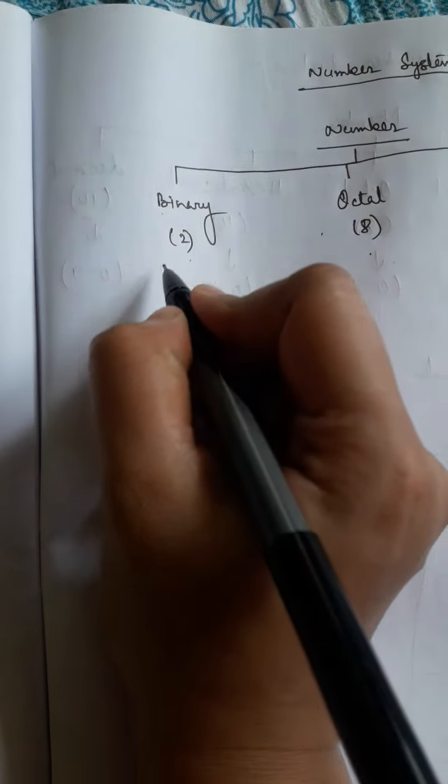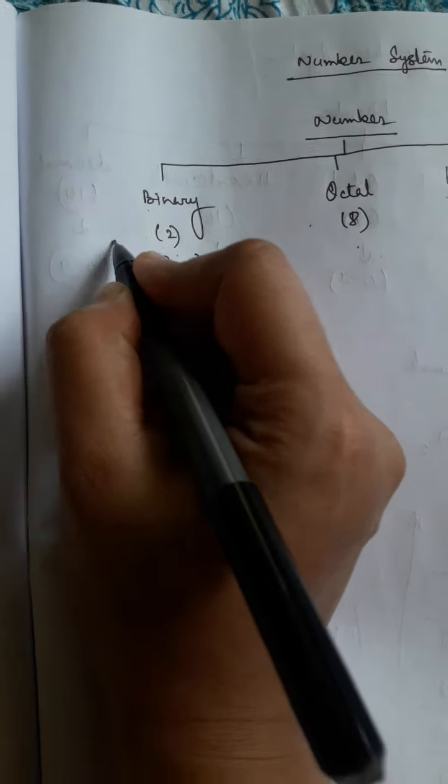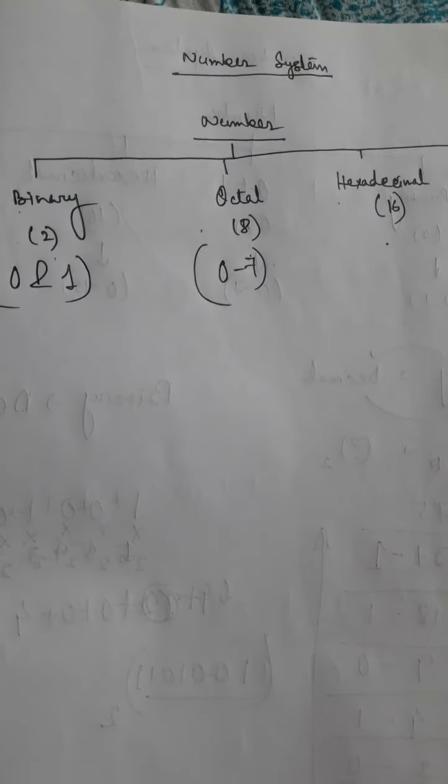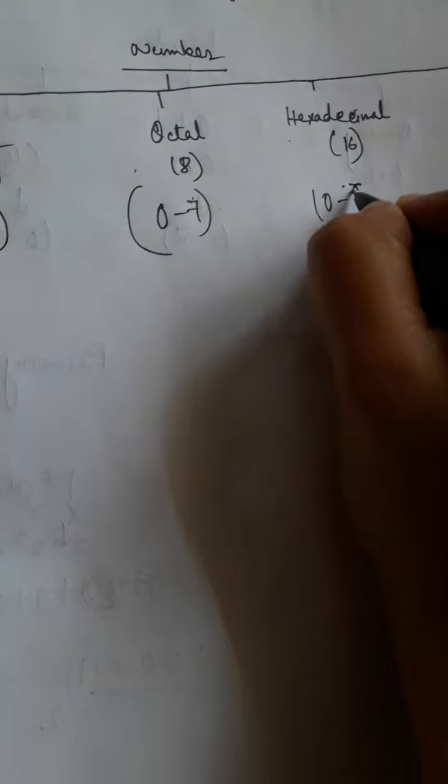The binary number deals with only 0 and 1 because base 2 means 2 digits. Base 8 means total digits 8 but the range will be 0 to 7 because each number system starts with 0. Base 16, the number will be within 0 to 15 and base 10 is 0 to 9.